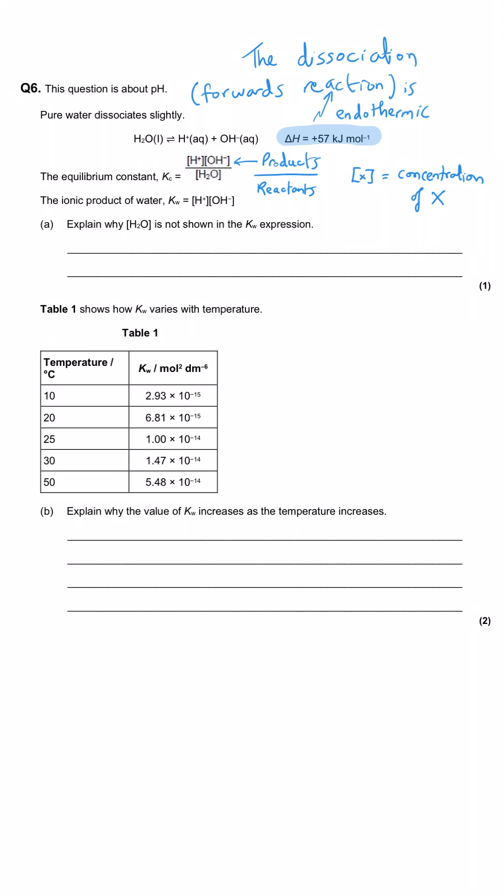The ionic product of water, Kw, is shown here as H plus concentration multiplied by OH minus concentration. In part A, we are asked to explain why the water concentration is not shown in the Kw expression.